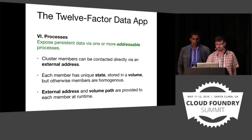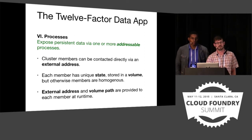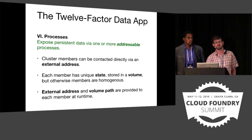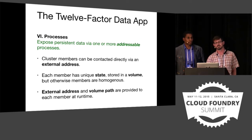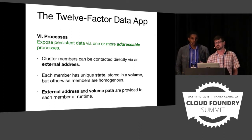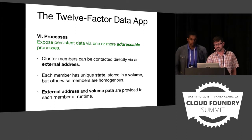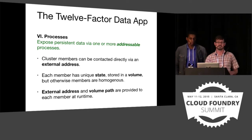Digging into the first point more deeply: exposing persistent data via one or more addressable processes means each individual member can now be directly addressed. Whether you expose that address publicly is up to you — you may only want these things individually addressable by a service broker or some other internal client. Any client talking to this data service will have an algorithm where it needs to know which member it's talking to; it can't just round-robin between members. Each member has a unique state persisted in a volume, but the members are otherwise homogenous.